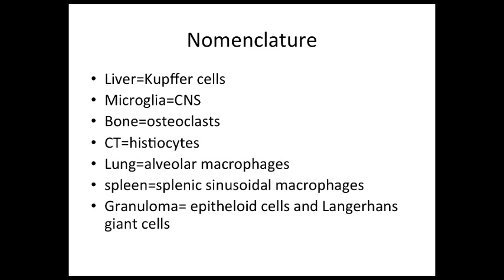Upon re-exposure, these T helper cells send many different chemical signals, such as gamma interferons, that modify the macrophages into more effective cells. By this modification, the macrophages also change their shape — they get a shape that resembles epithelial cells, including their nuclei, and so we call them epithelioid cells. The suffix '-oid' refers to resembling.